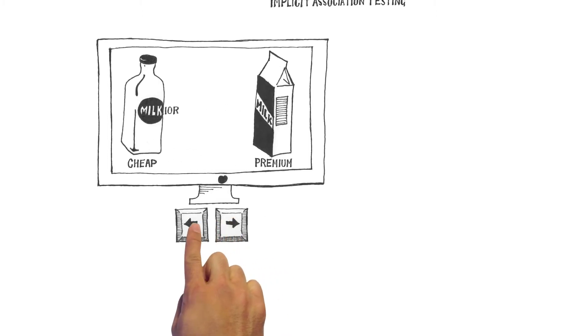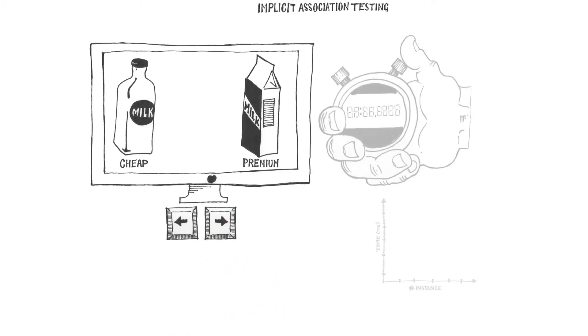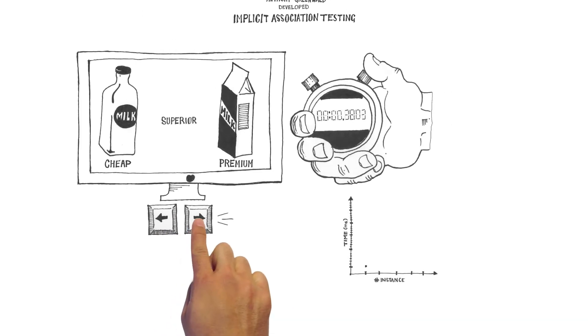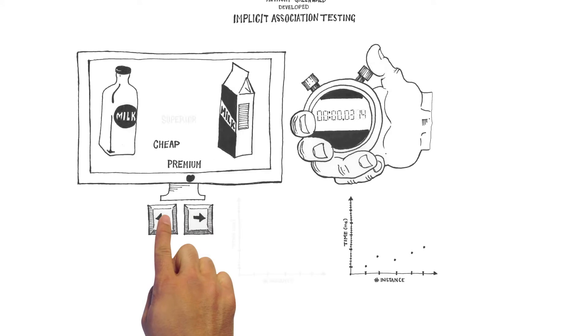The concepts then switch sides, and the process is repeated multiple times. Responses are timed to the thousandth of a second, to collect nearly 1,000 data points for each respondent.